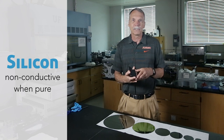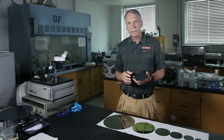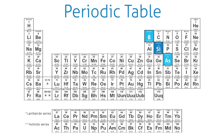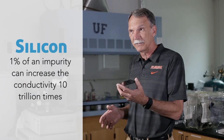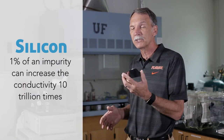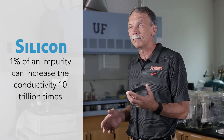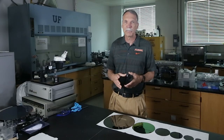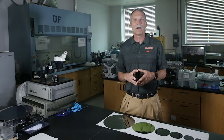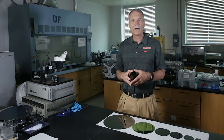You might think: great, I have an insulator — I have glass and lots of other insulators, so why would I care about silicon? It turns out that what's weird about this material is that if you add a small amount of an impurity like boron, a group 3 element, or arsenic, a group 5 element, you can actually increase the conductivity of the material 10 trillion times with less than one percent of an impurity. That's a stunning property of a semiconductor.